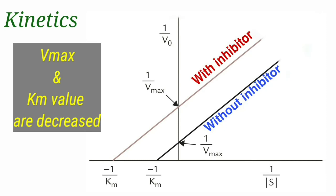Coming to kinetics of uncompetitive enzyme inhibition, here both velocity maximum and Km are decreased.